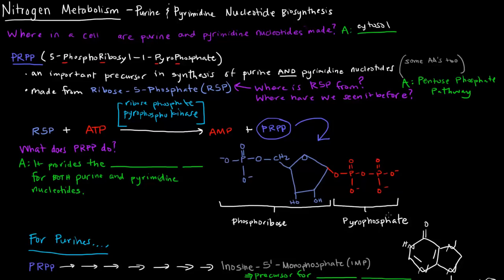What does PRPP actually do, and why is it important in the synthesis of purine and pyrimidine nucleotides? It provides the phosphoribose unit for both the purine and pyrimidine nucleotides. This portion here, this portion is important for the synthesis of purines and pyrimidines. This is the pentose sugar portion and the phosphate portion for those nucleotides.